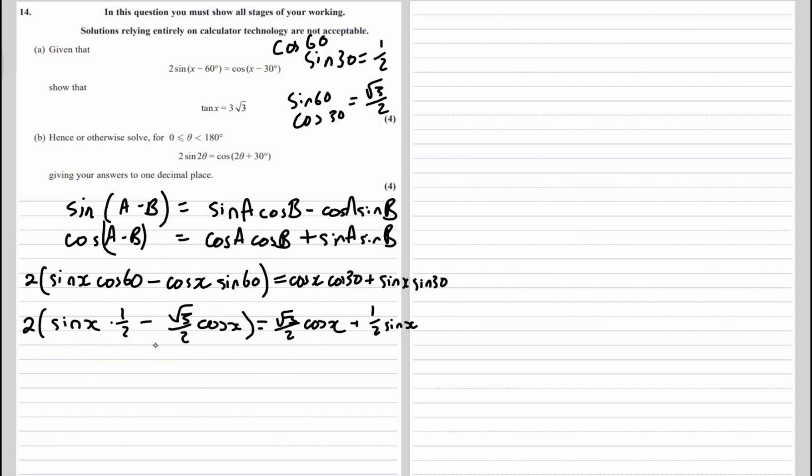And then I'll expand this bracket, so the 2 and the half are going to cancel out. So sine x minus root 3 cos x equals root 3 over 2 cos x plus half sine x.